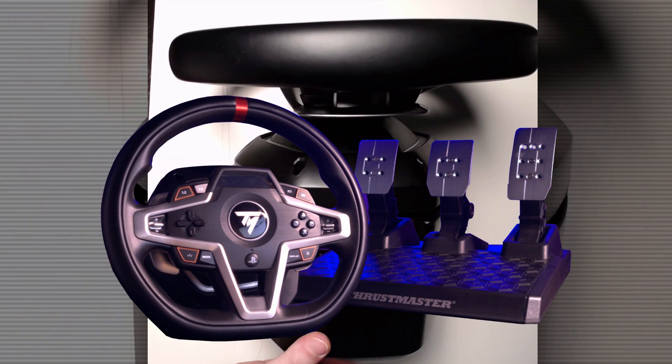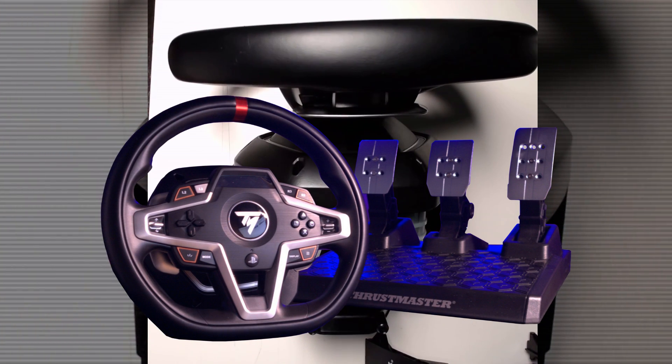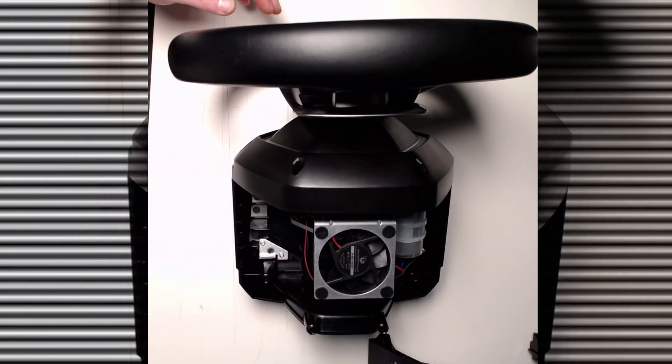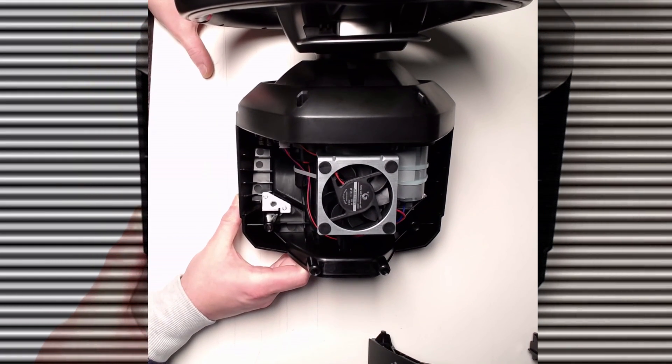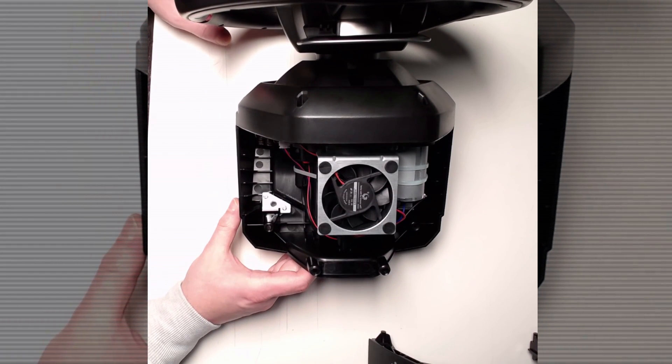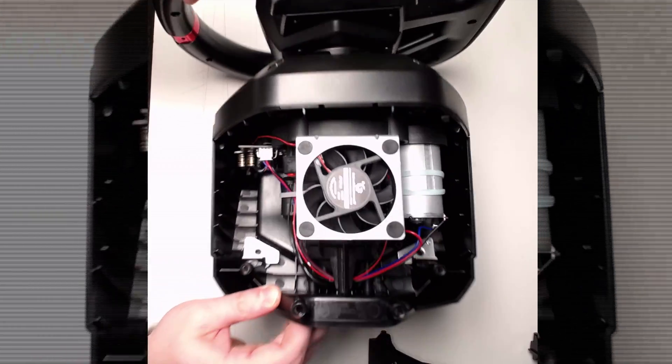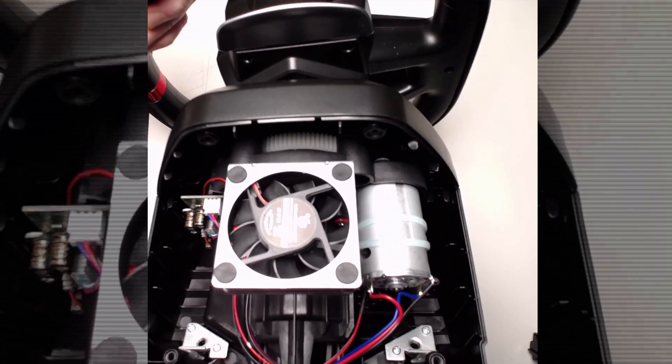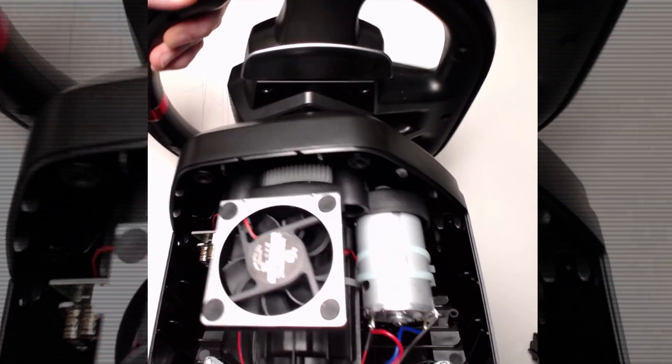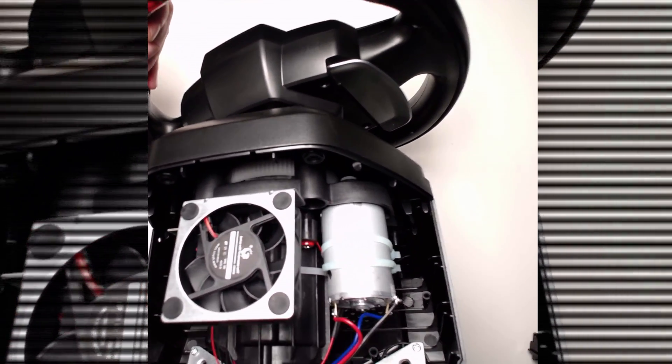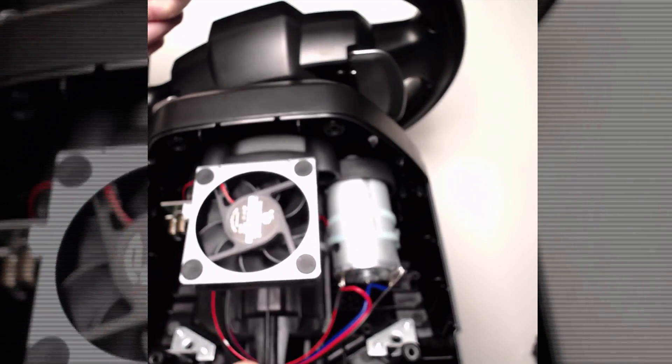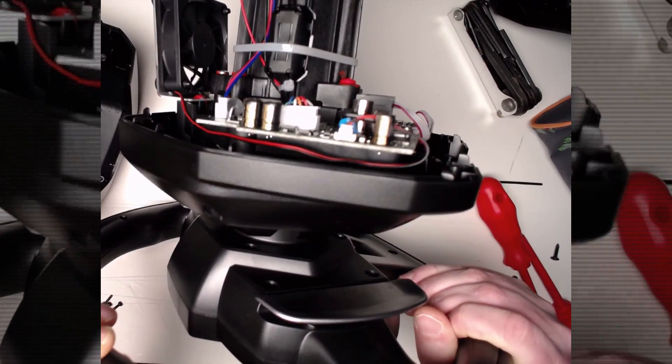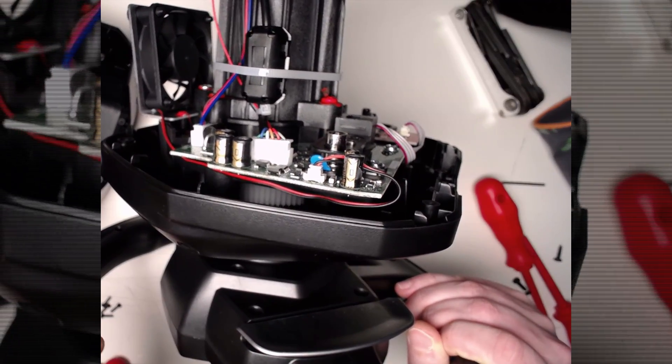One of those hybrids is the latest T248 of Thrustmaster. I bought this base recently to review it and opened it up to see what the hybrid was about. In this wheelbase, the driving motor is connected to a series of smaller and larger cogs to amplify the torque, after which it is being driven by the last cog to the shaft driving the steering wheel by means of a belt. This results in a combination of more torque and the fluidness of a belt system.